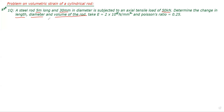These three things we need to calculate. You can expect this problem for 6 marks or sometimes 8 marks. Take E equal to 2×10⁵ N/mm². Young's modulus is given and Poisson's ratio is 0.25. Let me write the given data.